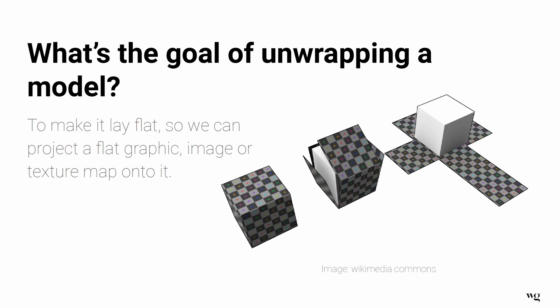So what is the goal of unwrapping a model? It's to make our model lay flat so we can take a two-dimensional texture or image and map it onto it. In this example, you see a box being unwrapped — imagine unfolding a paper box so you can draw on it whatever you want because it's been flattened out. Then you fold it back up and your image is correctly laid out on the box.